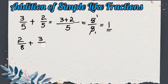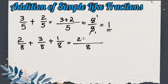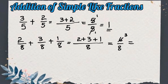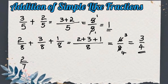Now in the next example let us add 2 by 8 plus 3 by 8 plus 1 by 8. Here I have three fractions. The process is the same — we will write 8 in the denominator and only add the numerators. We will get 6 in the numerator and 8 in the denominator. Now 6 and 8 can be cancelled using the table of 2: 3 twos are 6 and 4 twos are 8, so we get 3 by 4 as the answer.